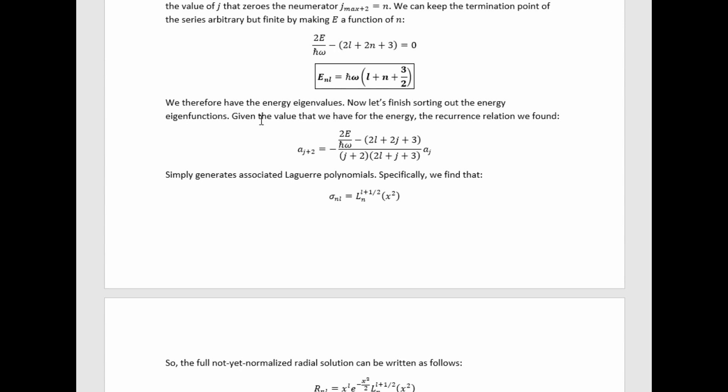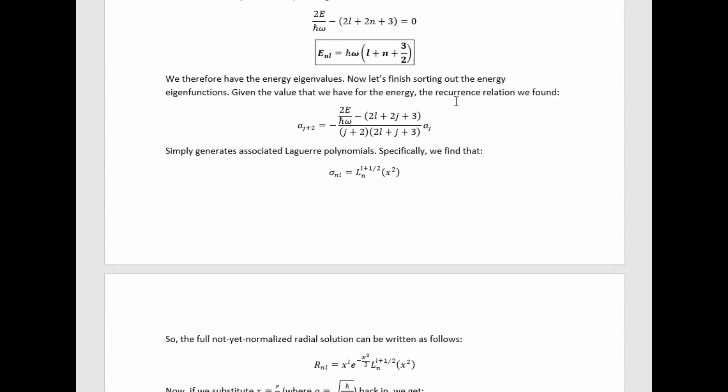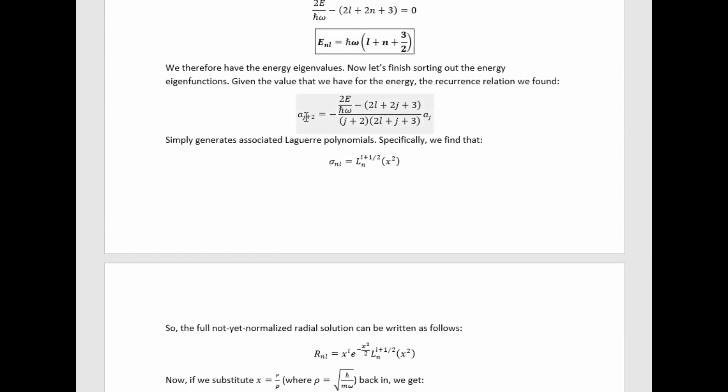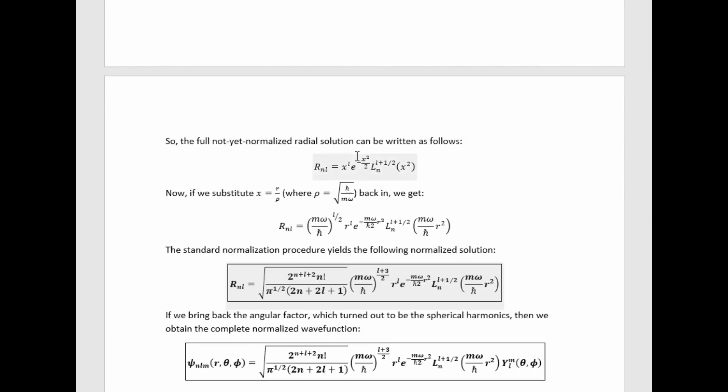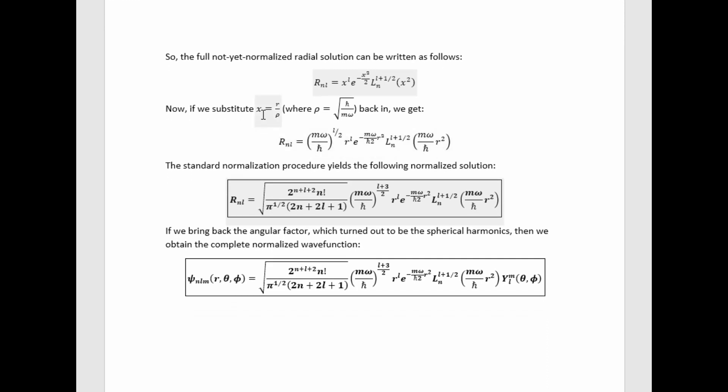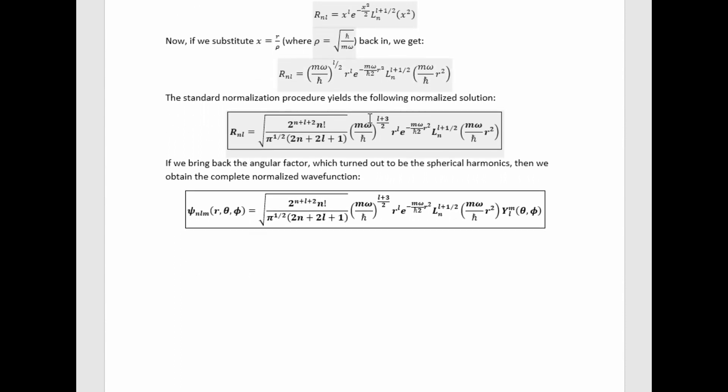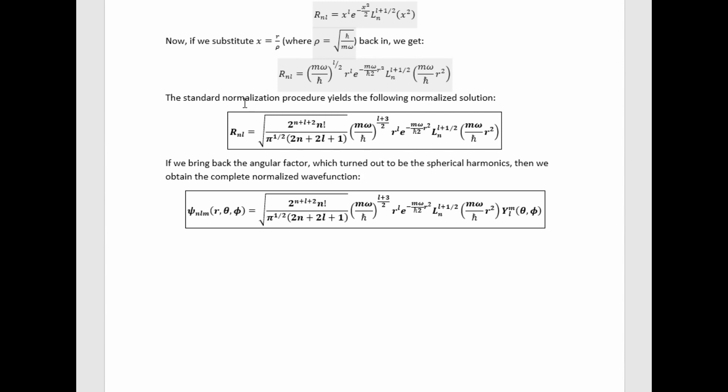Now let's finish sorting out the energy eigenfunctions. Given the value that we found for the energy, this value here, the recurrence relation that we found, this, simply generates associated Laguerre polynomials. Specifically, if we use this recurrence relation to generate a bunch of solutions, all they do is reproduce what this does in terms of associated Laguerre polynomials. So it's kind of a nice expression of it, where this x squared there is important. So then the full, not yet normalized radial solution can be written like this. We have these two asymptotic forms and then the polynomial behavior given right there. If we plug back in the value of x in terms of the radial coordinate and also the value of rho, then we arrive here. Now standard normalization procedures, we're normalizing the probability to be one of course, just gives us this. It's not a convenient integral to do. Integrals like the one required to get this normalized solution are usually done with computers these days.